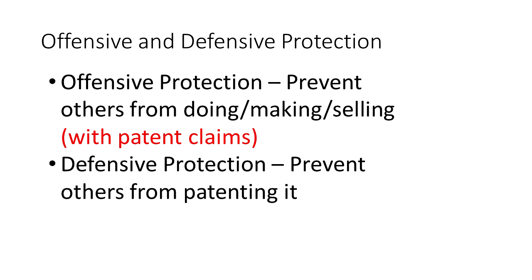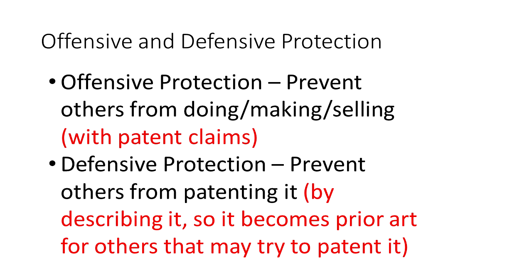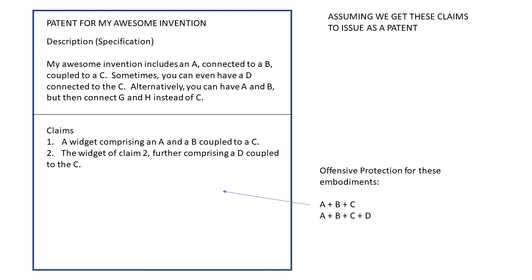Defensive protection means to prevent others from patenting your invention. Things in the written description prevent others from being able to get a patent on it. So when something is protected only with defensive protection, we can't stop others from doing it, but we can prevent them from getting a patent on it. Going back to the original question: with our claims as they are, we have offensive protection for two embodiments — A+B+C from claim one, and A+B+C+D from claim two — assuming we get these claims to issue as a patent.